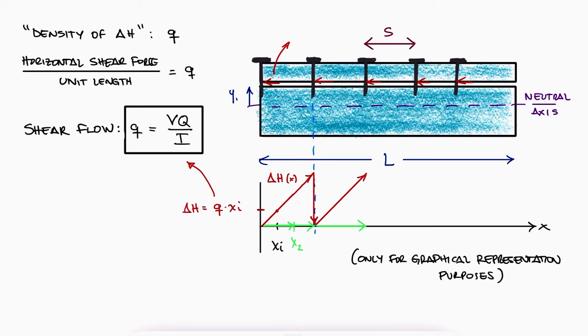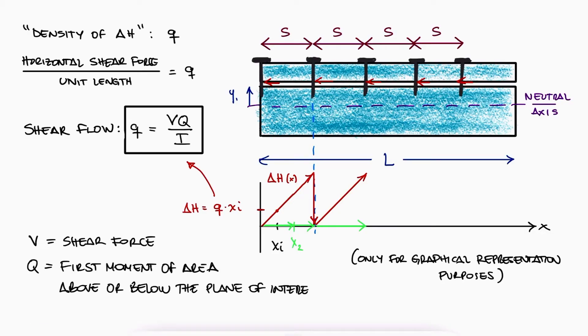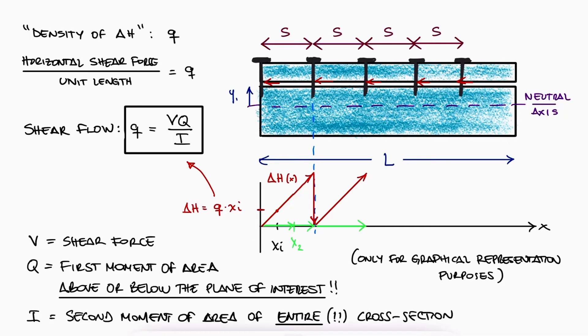As long as the nails or bolts are located equidistantly from each other, the way we use the shear flow concept is calculating the shear flow q by calculating v, q, and i, and multiplying it by the distance between nails or bolts to find the force that each nail or bolt is subjected to.